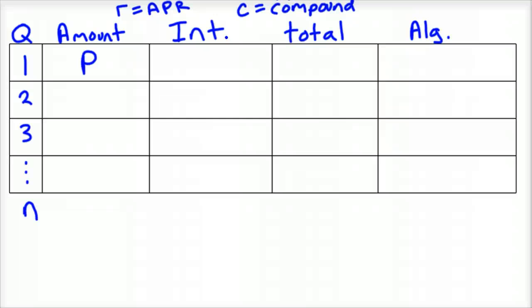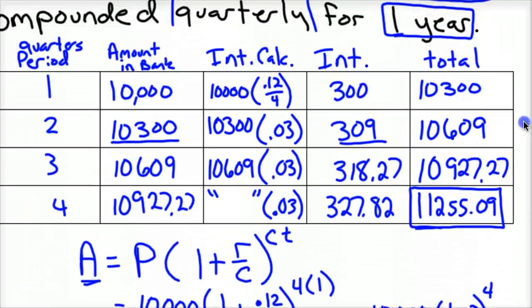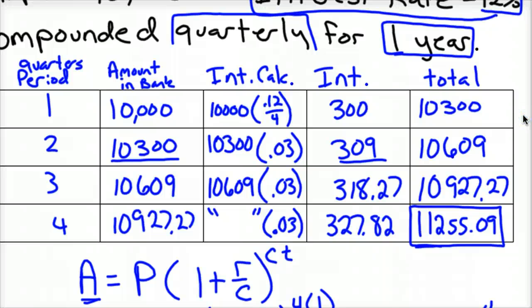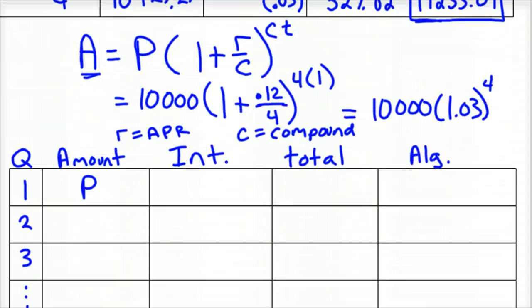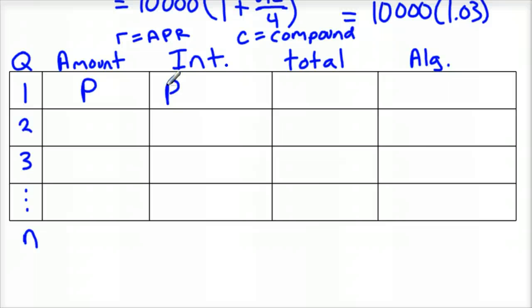And so we'll calculate it just like we did before. So notice if we went up here to this actual problem, we took 10,000, which is our P, times 0.12 divided by four. So we took our rate divided by our compounds. So we'll go ahead and do that. Principle times rate divided by compounds. That is our interest. So our total would be P plus that amount, that interest amount, P times R over C.